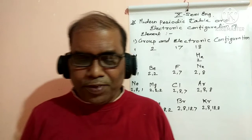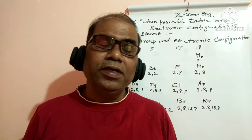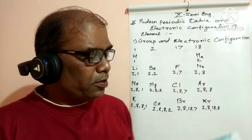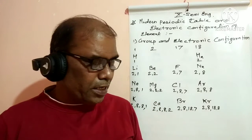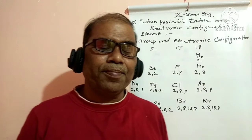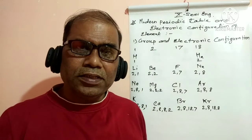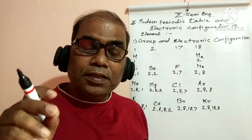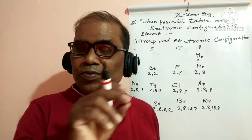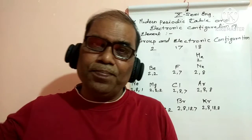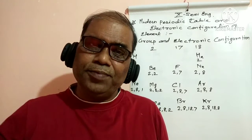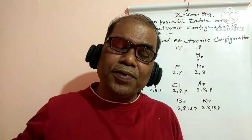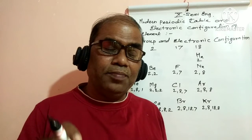Today's topic is the modern periodic table and electronic configuration of elements. Using the electronic configuration, such as 2,7 or 2,7, you can find the position of an element — its period and its group.